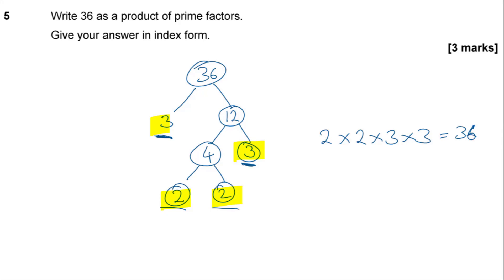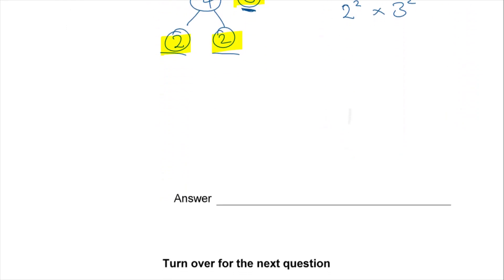Now it does actually ask us to do it in an index form here, so we just need to write that in powers rather than as a sequence of multiplications. So, 2 times 2 is 2 squared, and 3 times 3 is 3 squared, so our answer is 2 squared times 3 squared.